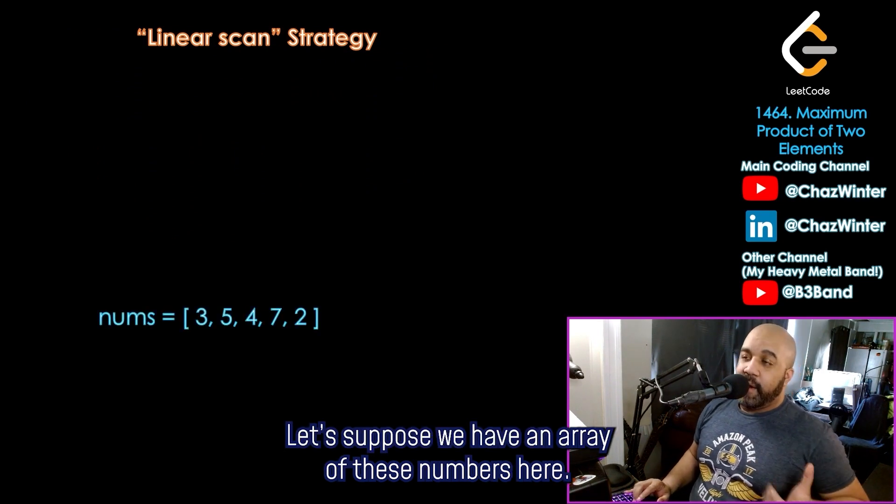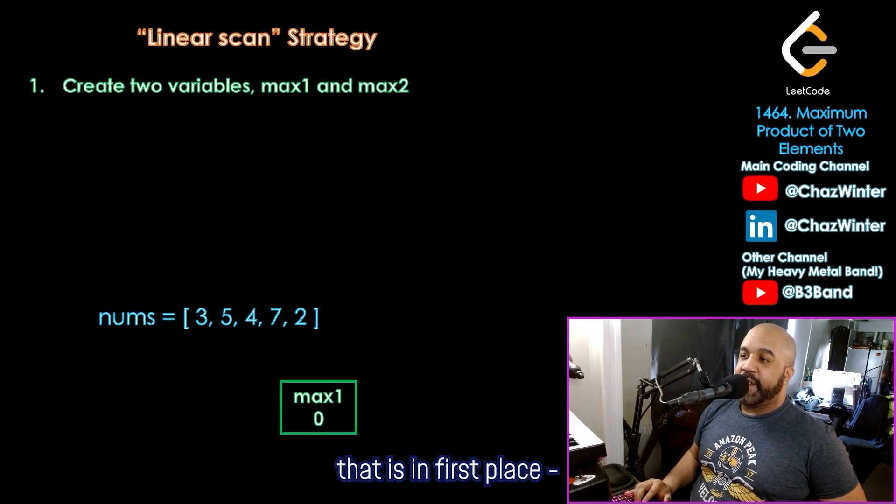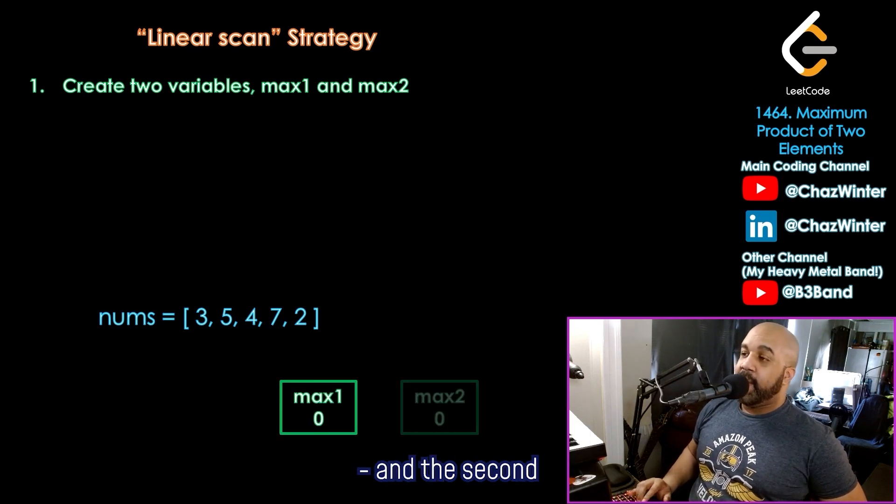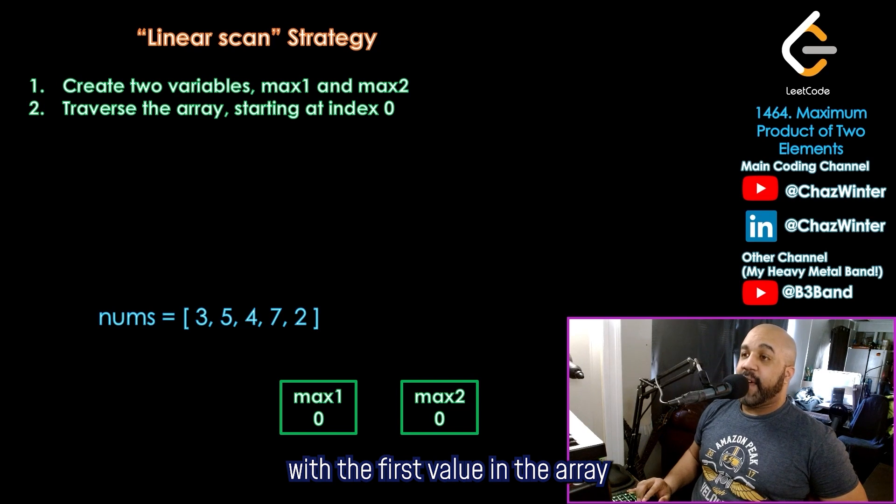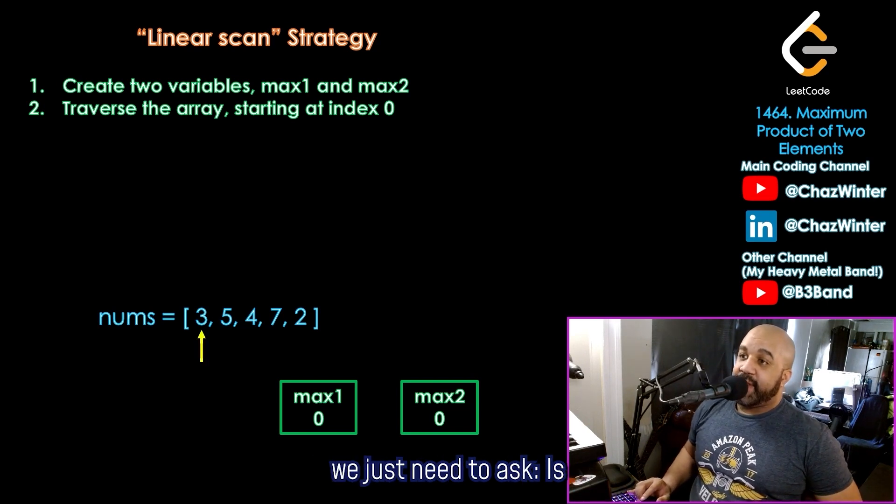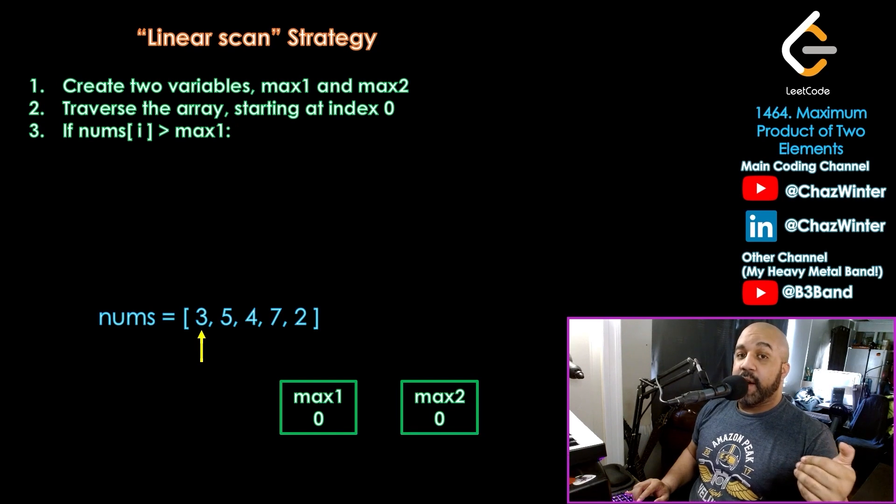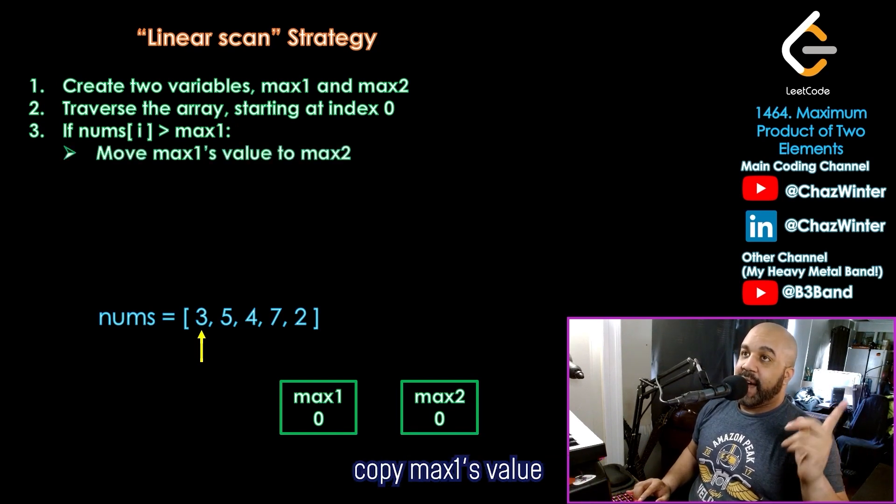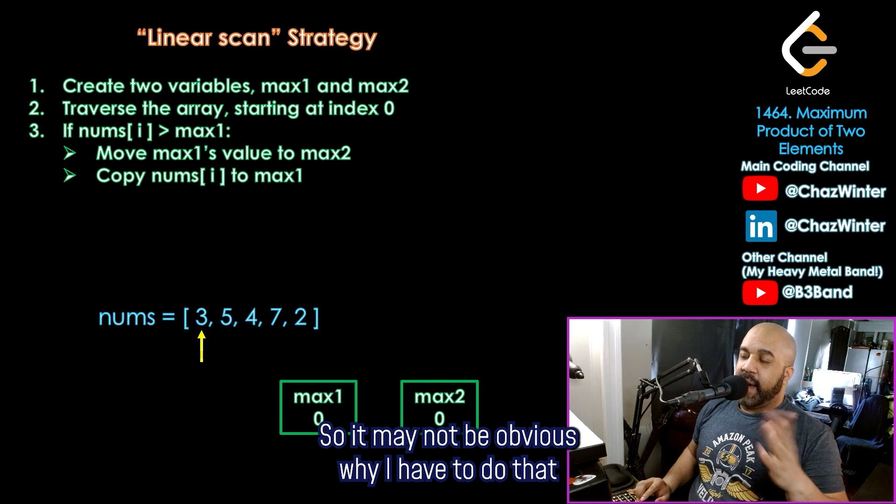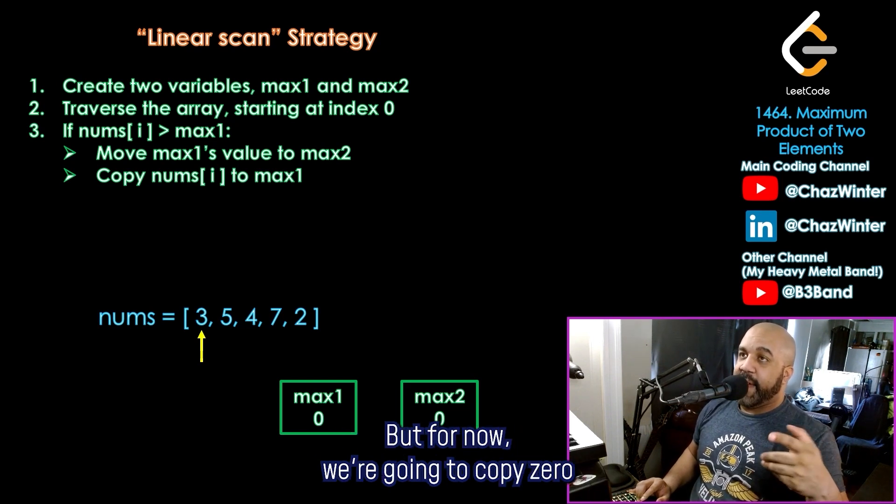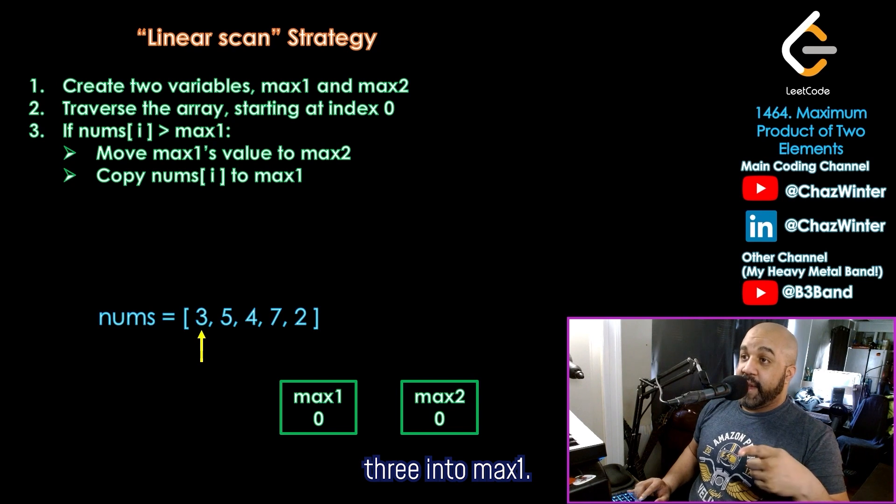So let me show you the linear scan strategy. Let's suppose we have an array of these numbers here. What we're going to do is create two variables, max one and max two, they're going to represent the value that is in first place. So the largest value in the array, and the second largest value in the array, we're going to traverse this array starting at index zero, starting with the first value in the array, which is a three. So starting with the three, we just need to ask is three greater than max one. Or in other words, is three the largest value we have encountered so far. And if it is, then we're going to copy max one's value over to max two, and then copy this three into max one. So it may not be obvious why I had to do that first step just yet, but you'll see in just a moment. But for now, we're going to copy zero from max one over to max two, so nothing happens. And then we copy this three into max one.